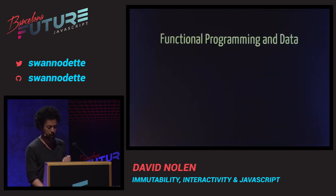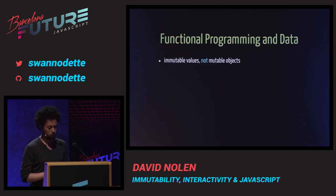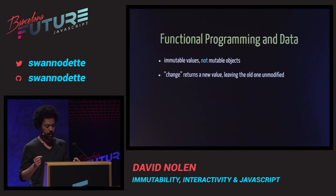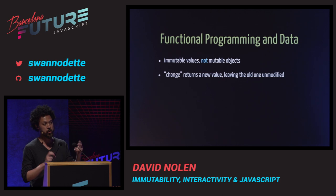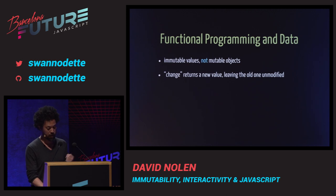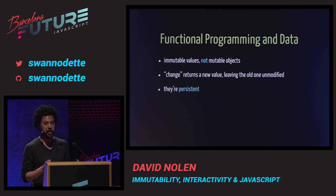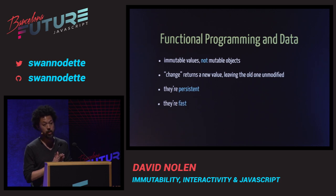Functional programmers want immutable values — functions and data, that's it. They don't want stateful objects. The idea is: if I have a data structure and I change it, I'm not going to destroy the old one. With a mutable array you're destroying the previous value it represented. Persistent data structures give you the convenience of regular data structures but they don't destroy the previous value. They can also be fast — that's what's relatively new. People didn't understand until within the last decade how this could actually be done efficiently in practice.